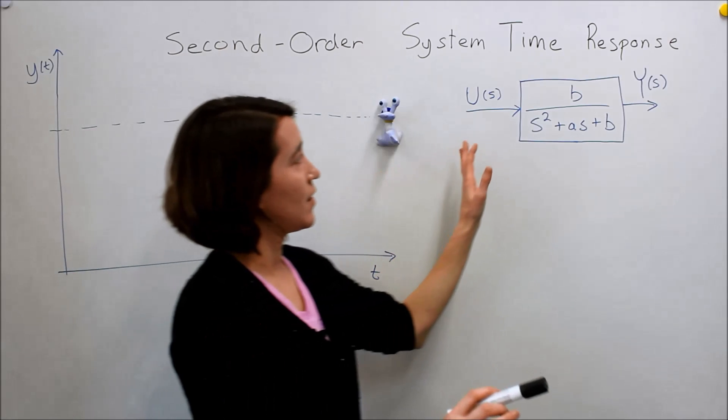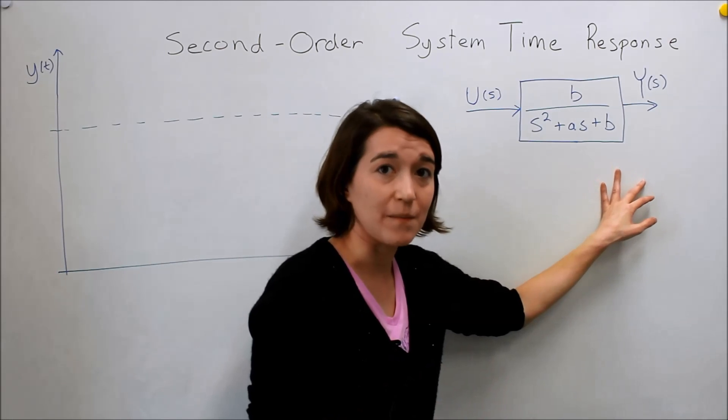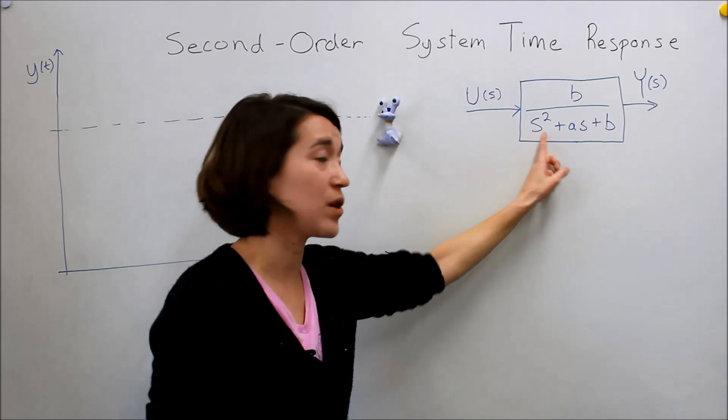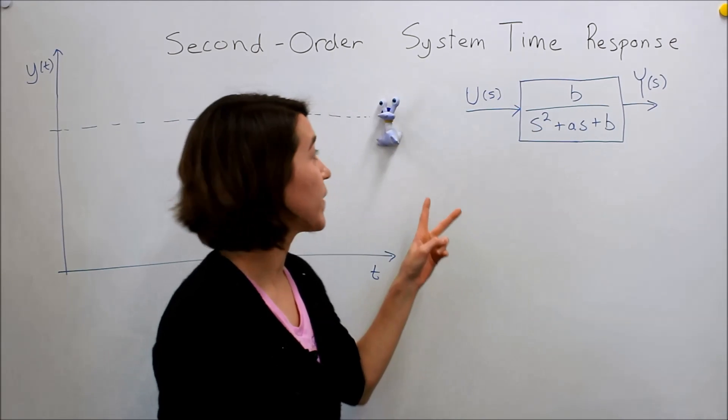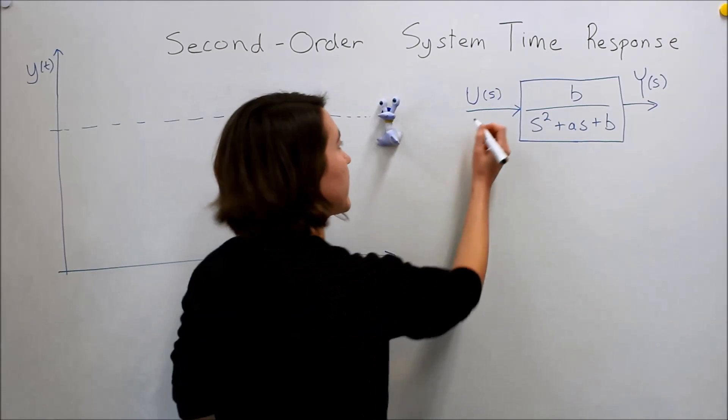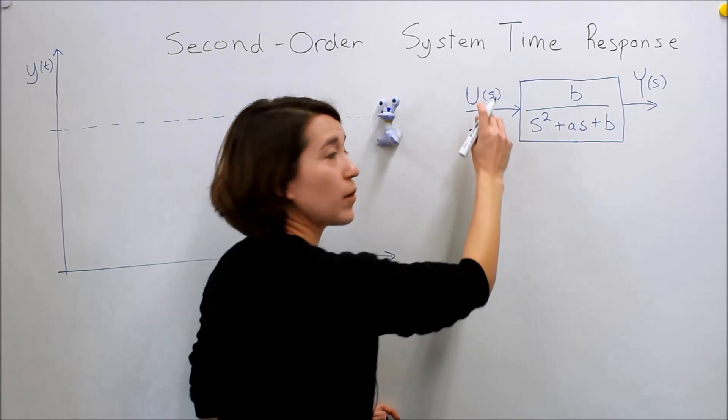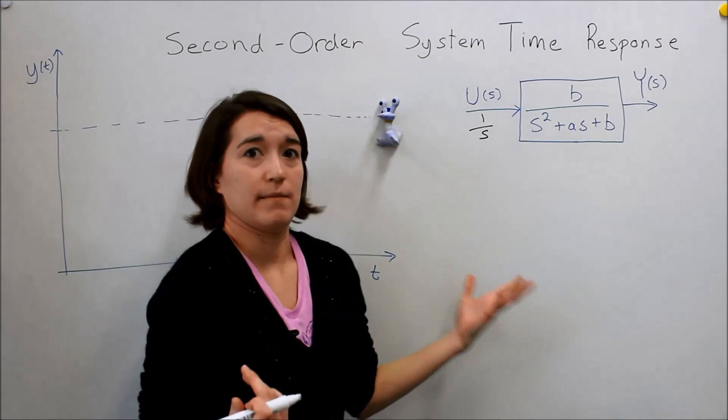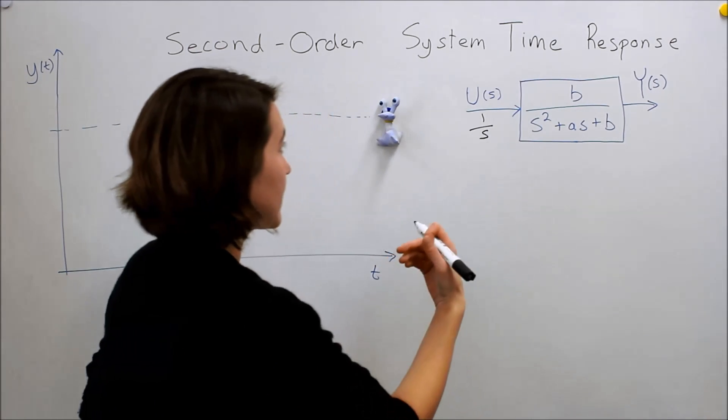So we're going to assume that we have a second-order system, and it's second order because it has two poles here, so we have s squared, so we know there will be two poles here. And again, we're going to input our step function, 1 over s, to see how the system reacts to a step input.